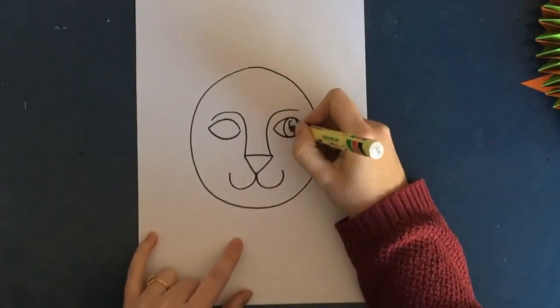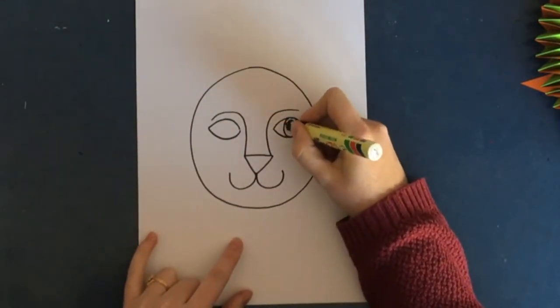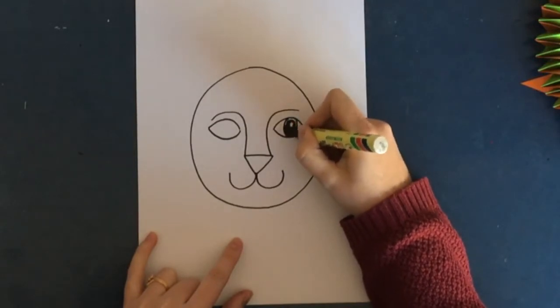Draw a circle inside the eye and you can even leave a little white glint there, and you can do the same thing on the other side.